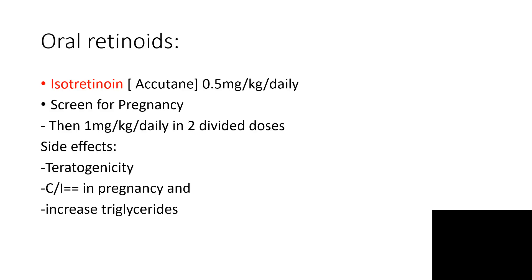Oral retinoids — we have topical ones, and now oral, that is Accutane. This is given as 0.5 mg per kg daily. Screen for pregnancy because there are severe side effects of teratogenicity. It is contraindicated in pregnancy and it can increase triglycerides — and when triglycerides are increased, pancreatitis is at the door. If it is well tolerated at 0.5 mg per kg per day, you double the dose — for example, increasing from 5 mg per day to 5 mg morning and 5 mg evening.